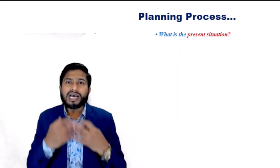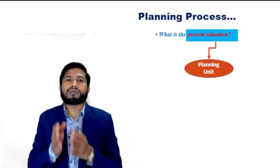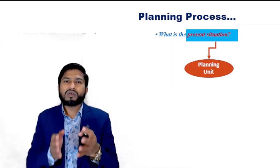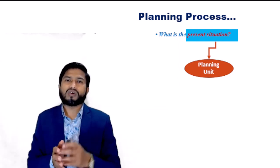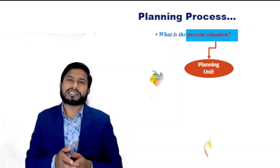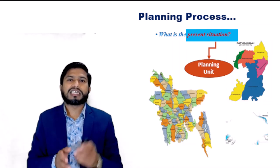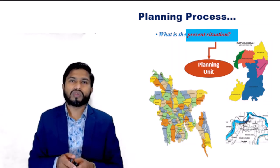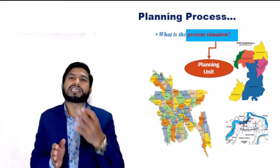It starts with the questions asked by the planner: What is the present situation? We can ask the planner, present situation for what? The answer is it is about the area or planning unit where planning will take place or where there is need for development or restructuring. It may be the whole country, a district, sub-district, or even a community. So the present situation will be identified firstly in the planning unit.